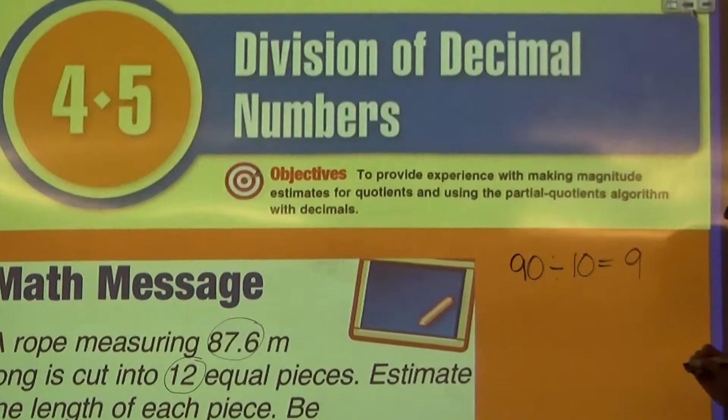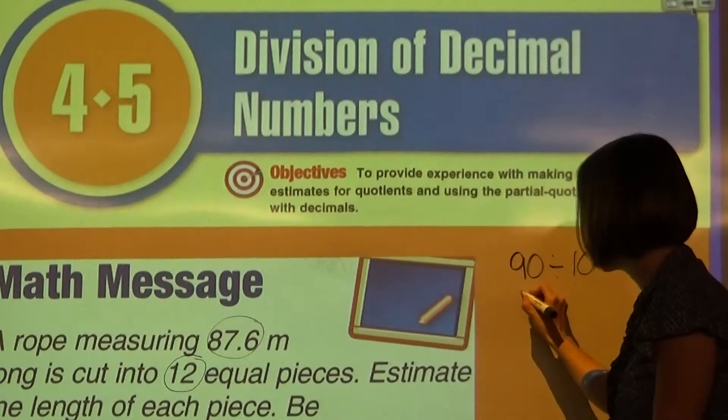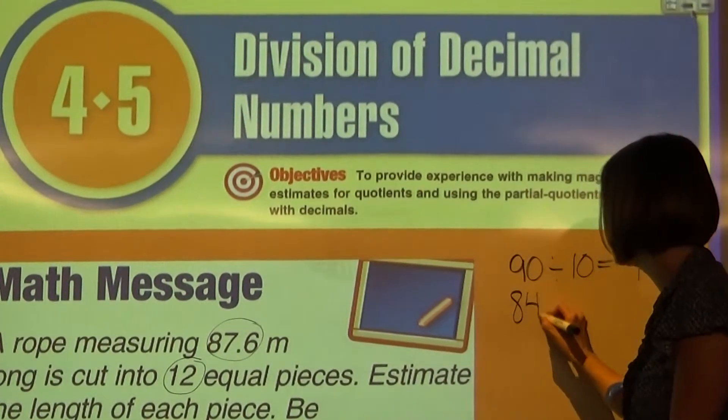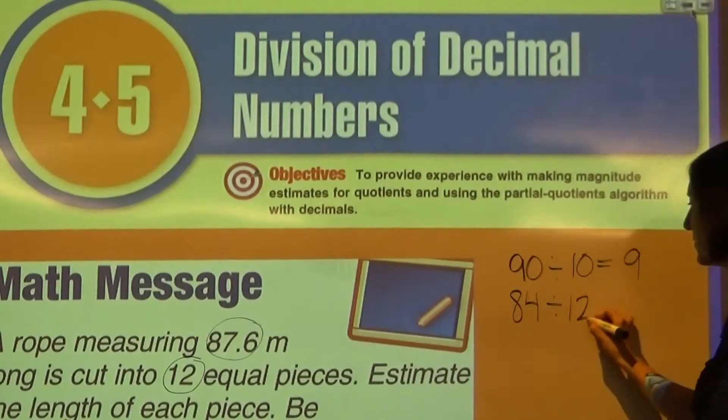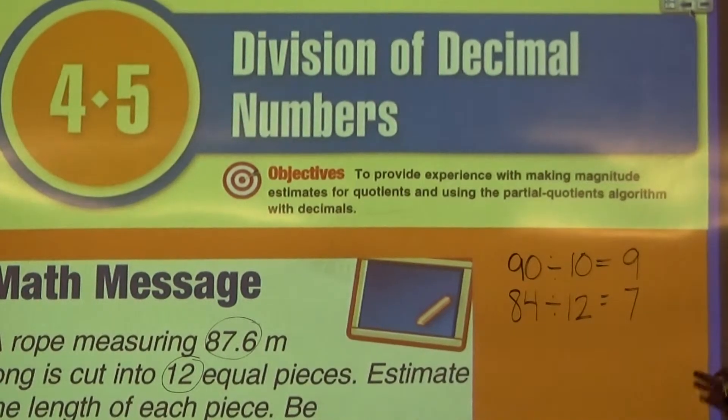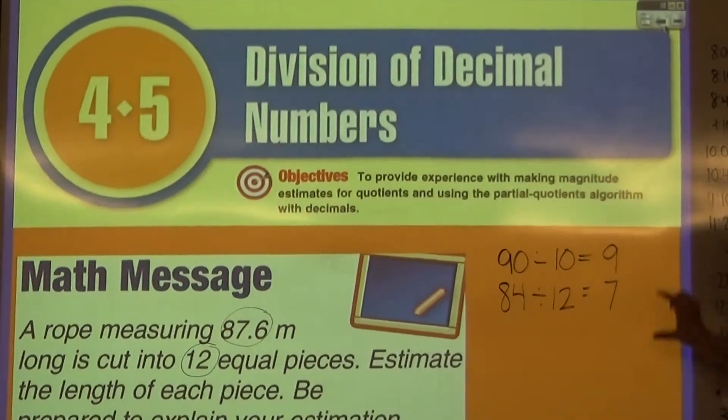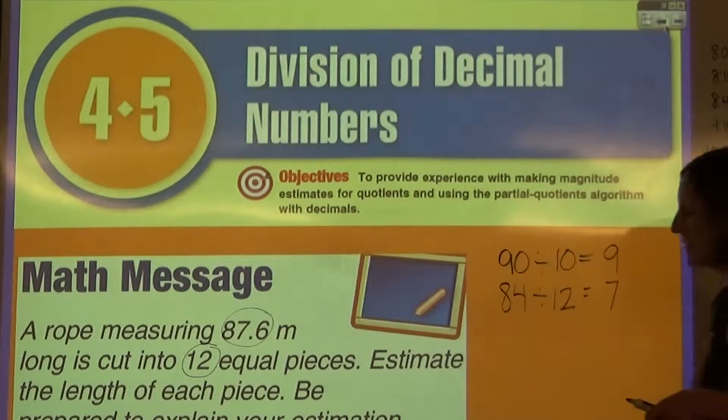If I wanted to maybe not round quite as much, I could do 84 divided by 12 and get 7. So my answer to this problem, if I were to work it out, should be somewhere between 7 and 9.